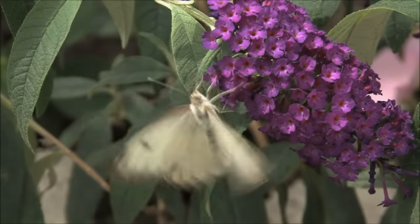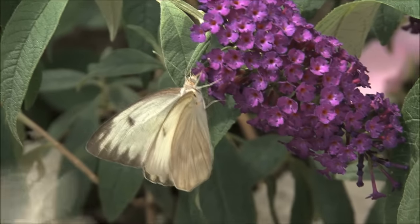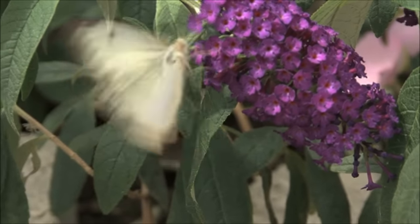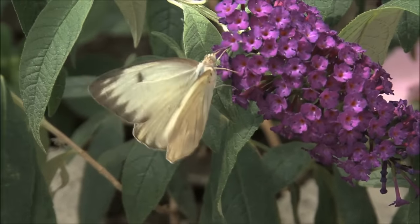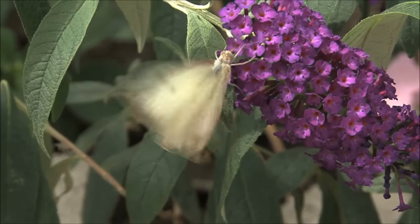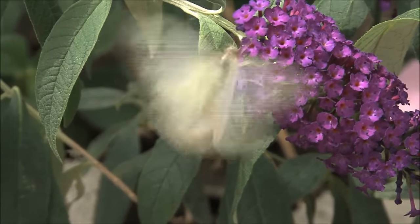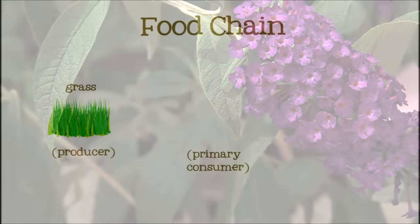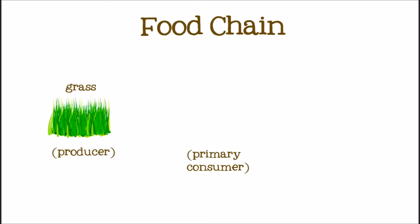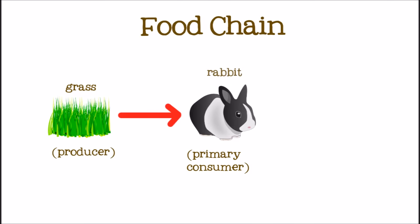An herbivore is called a primary consumer. Primary means first, because an animal eating plants is the first consumer in the food chain. Let's add a rabbit to our food chain.